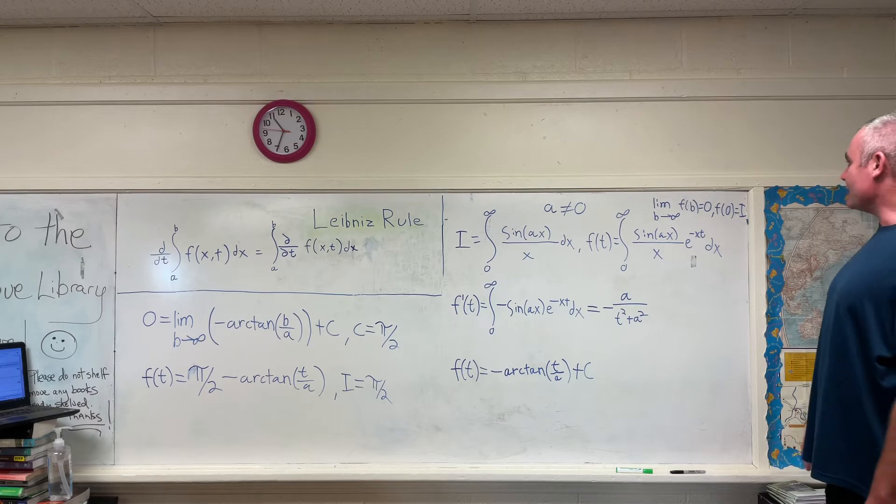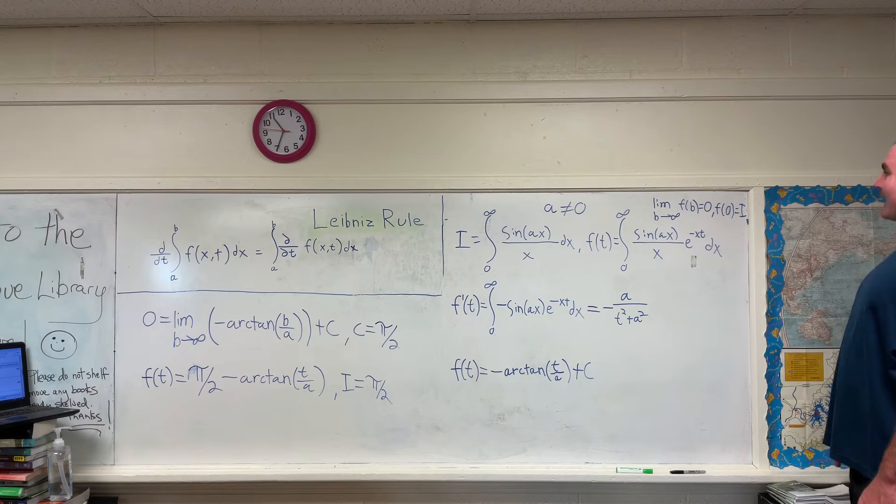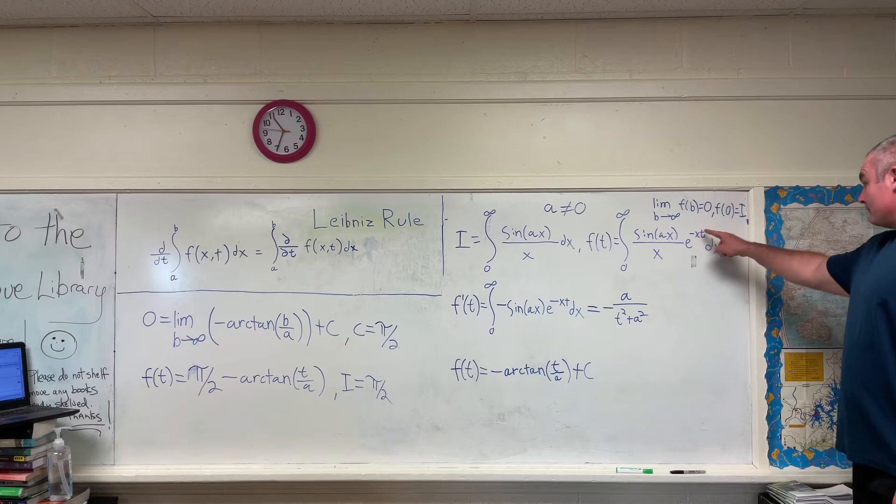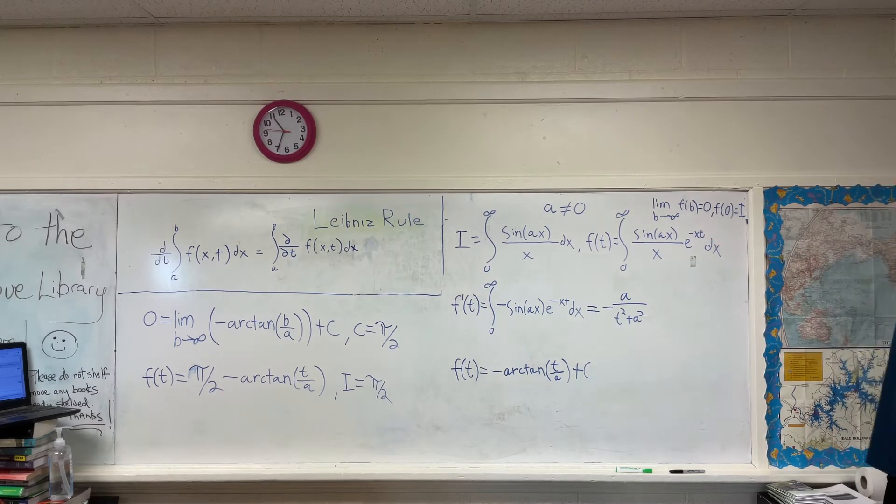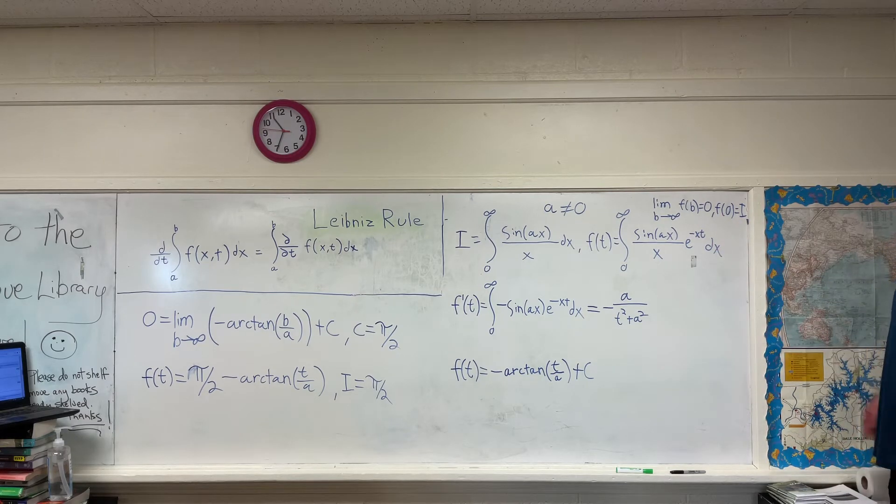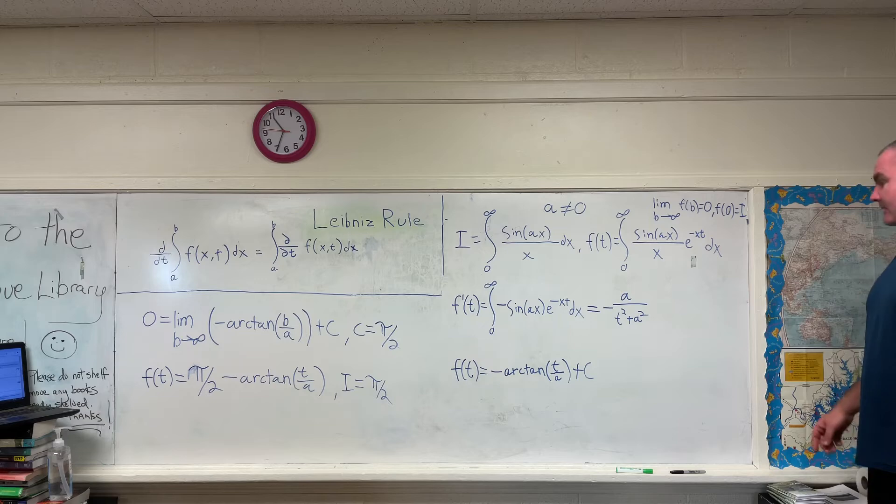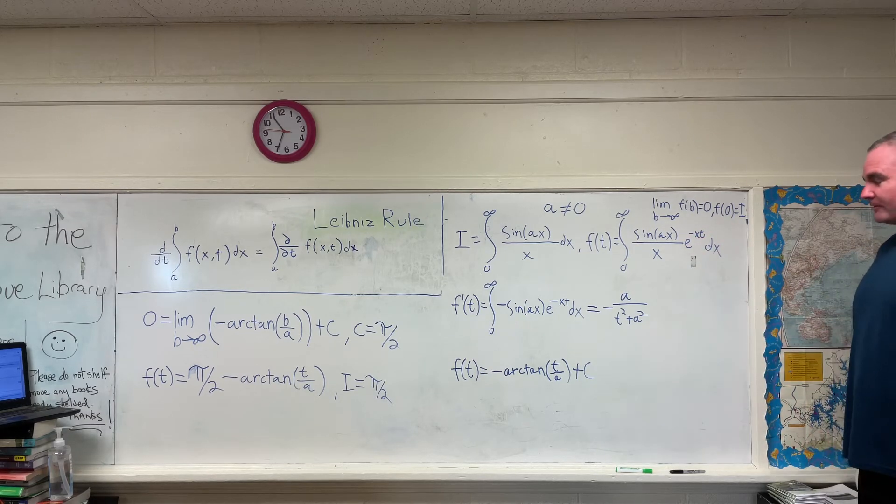And I forgot to mention earlier in the video, but we will note that if you evaluate f at some point b, meaning you're plugging b in for t, and then you're letting b approach infinity, you're going to get zero for the whole integral. I hope you can see why, because e to the negative infinity is zero. Anything times zero is zero. The integral of zero is zero.